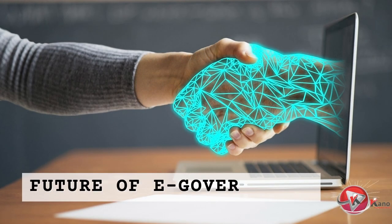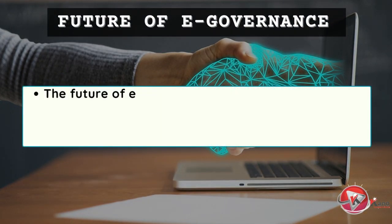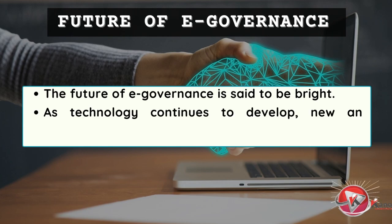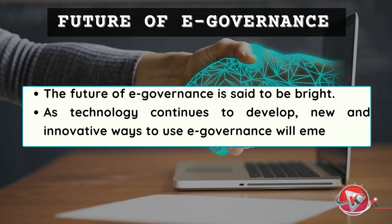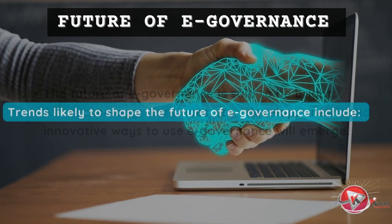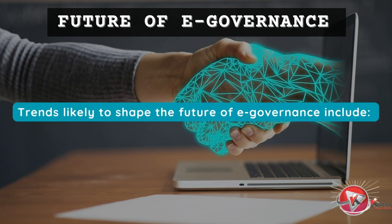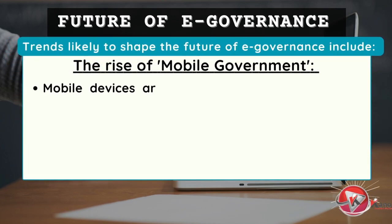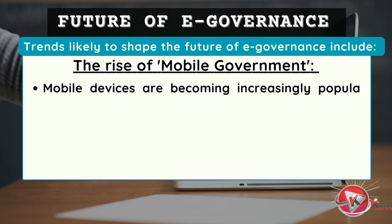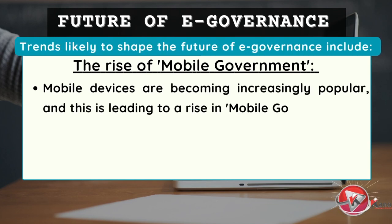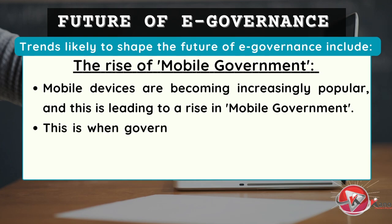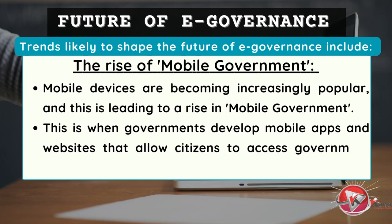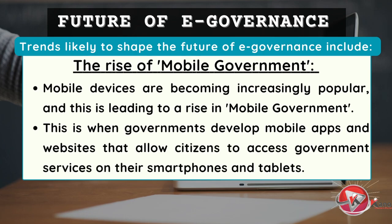Let's look at the future of e-governance. The future of e-governance is said to be bright. As technology continues to develop, new and innovative ways to use e-governance will emerge. Some of the trends that are likely to shape the future of e-governance include the rise of mobile government. Mobile devices are becoming increasingly popular, and this is leading to a rise in mobile government — when governments develop mobile apps and websites that allow citizens to access government services on their smartphones and tablets.